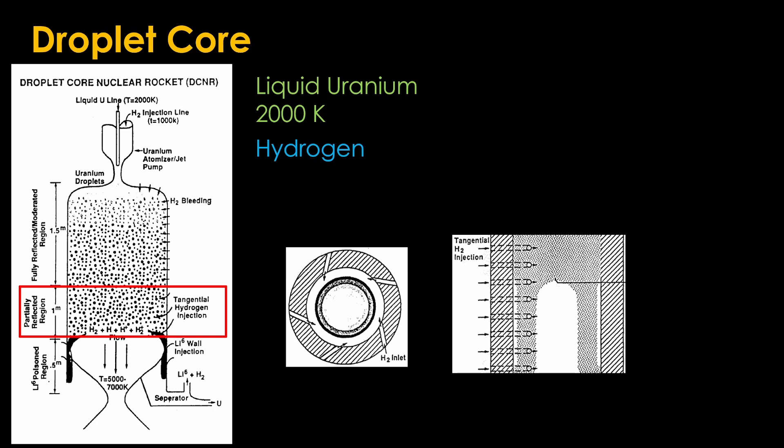We now have a lot of extremely hot uranium. We inject liquid lithium in the bottom part of the combustion chamber to cool the uranium down so we can separate it from the lithium and reuse it.